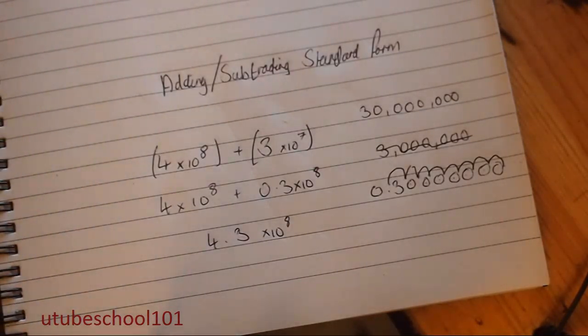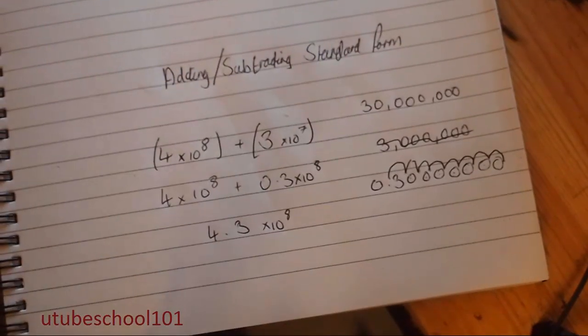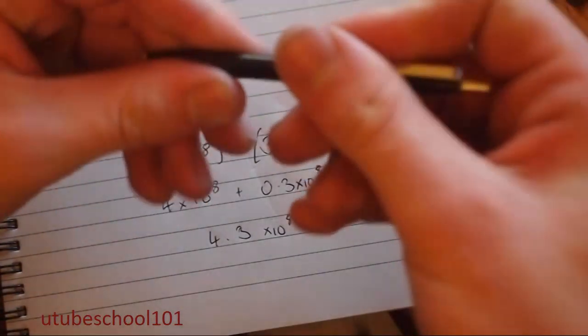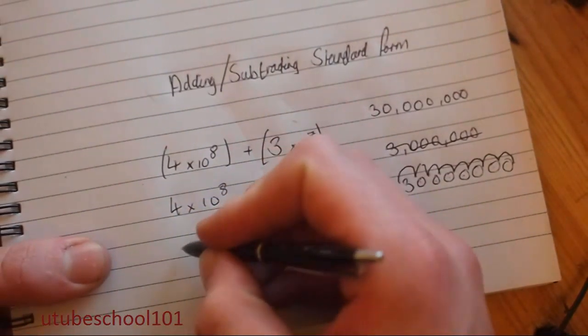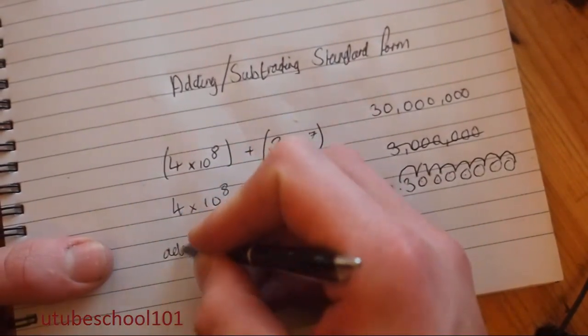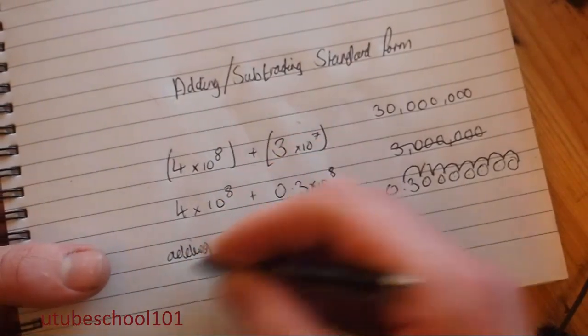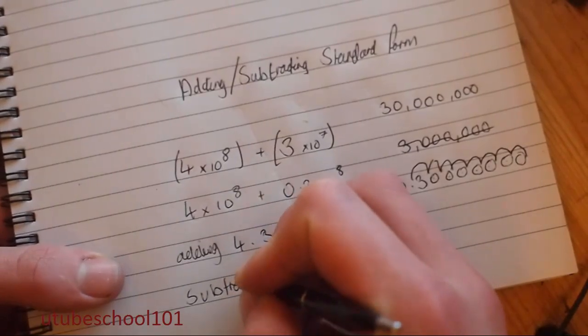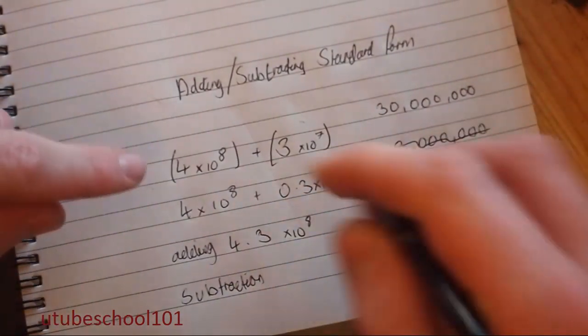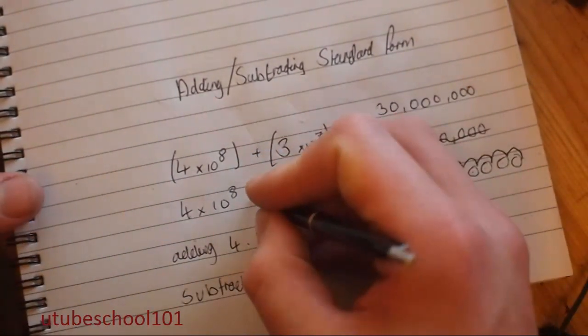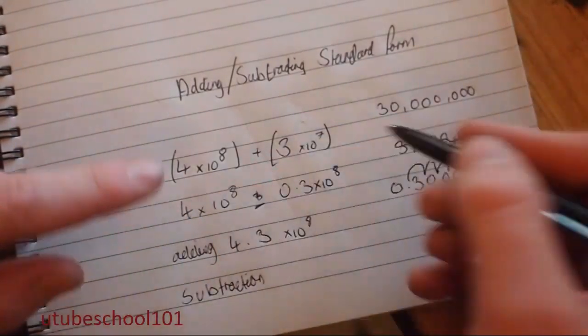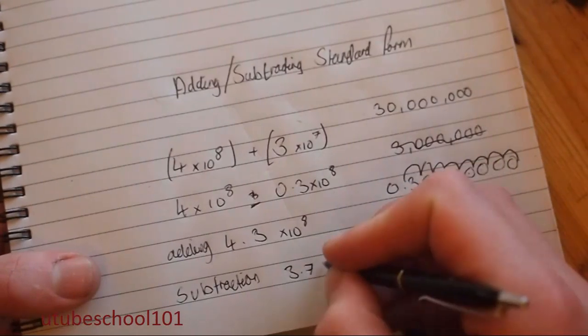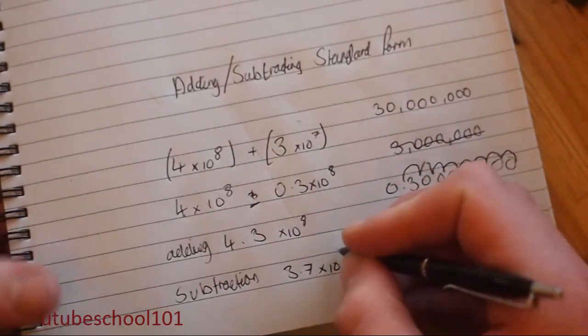And then for subtraction, we do exactly the same method, except we take away. So that procedure will split them up, so adding is this row here, and then subtraction this row here. So exactly the same, so we just press this out for a takeaway. So four take away zero point three is three point seven times ten to the power of eight.